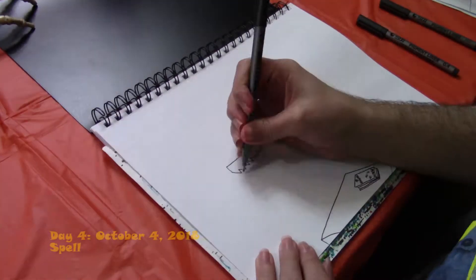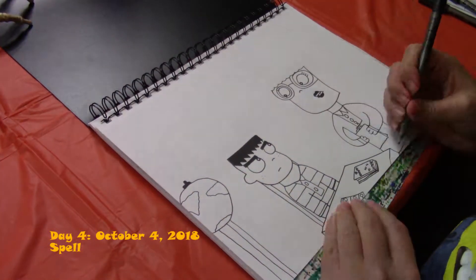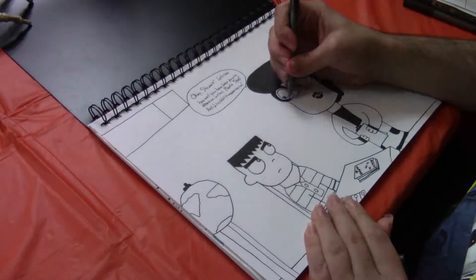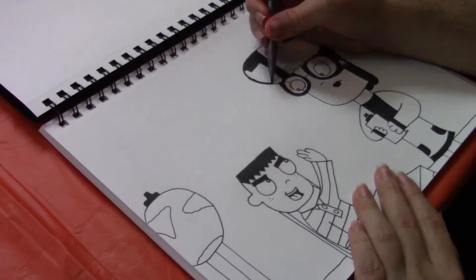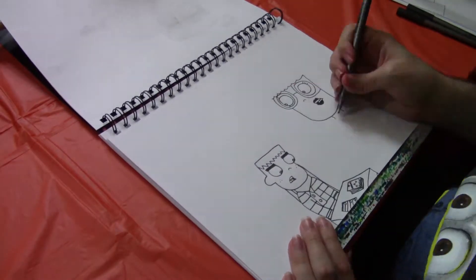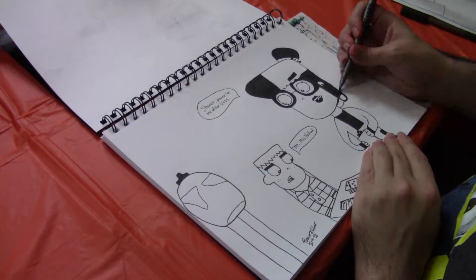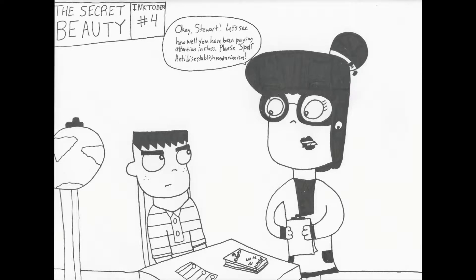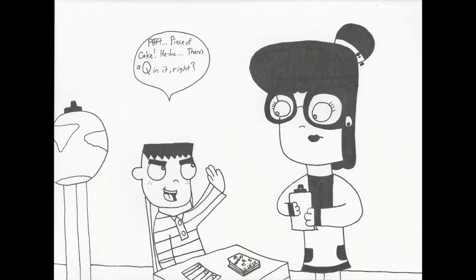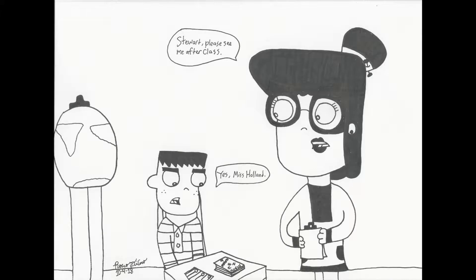Day four's prompt word is spell. So, for this comic, I drew Stuart in class with Miss Holland, his teacher, asking him how to spell anti-disestablishmentarianism. Because these kids are supposed to be smart. Now, this comic is three panels. Okay, Stuart, let's see how well you've been paying attention in class. Please spell anti-disestablishmentarianism. Piece of cake. There's a Q in it, right? Stuart, please see me up to class. Yes, Miss Holland. Oh, boy.